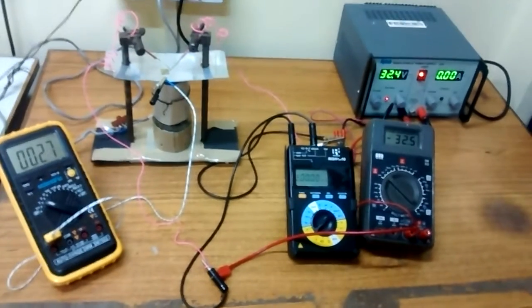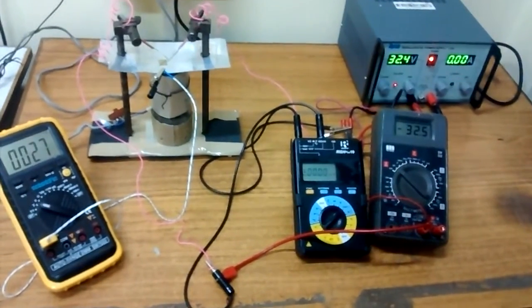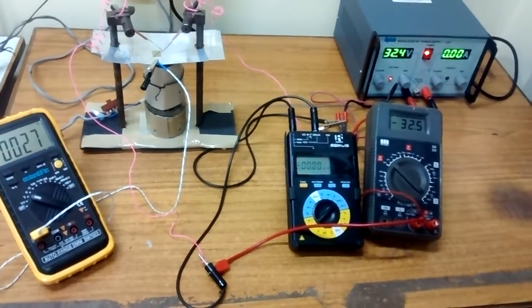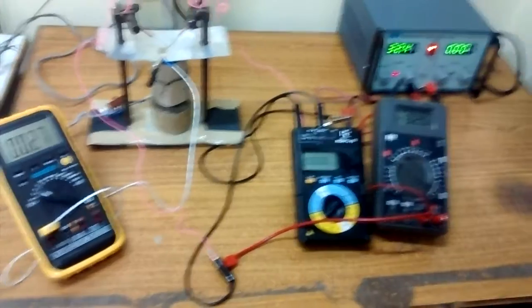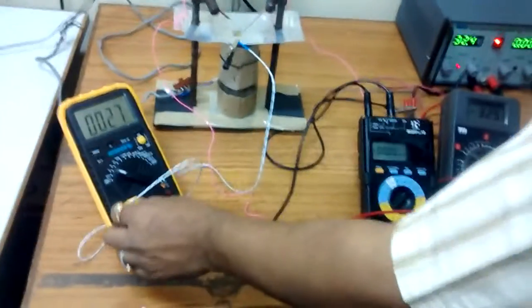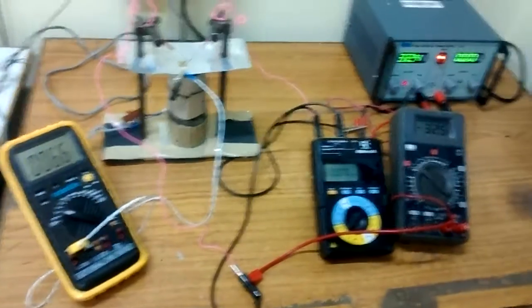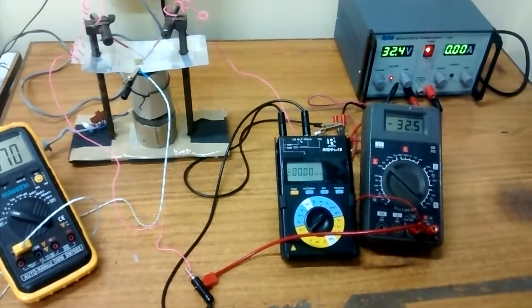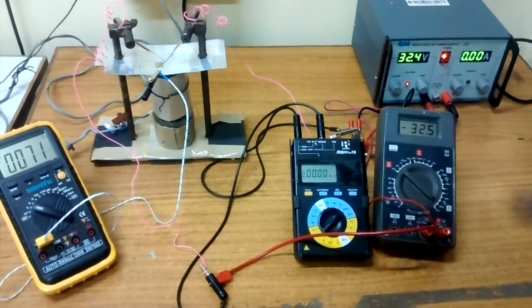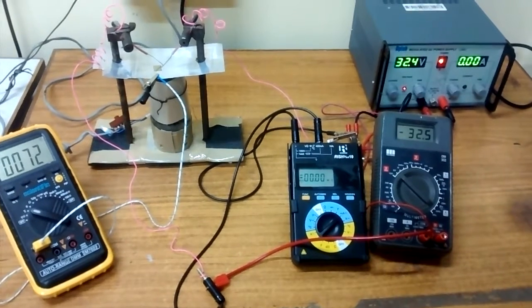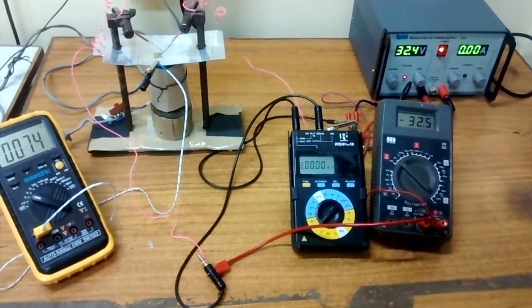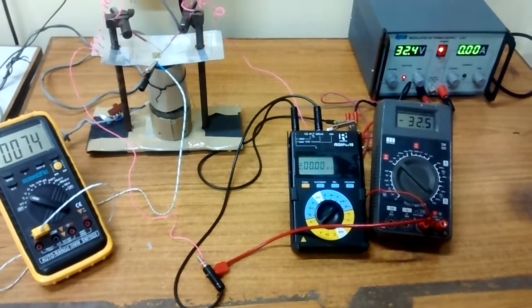It is in reverse bias mode. Now the temperature is not increasing. It has a loose connection. What is the temperature value now? 70. Now we have seen that it is in reverse bias mode, 32.5V and there is no current flow through it.